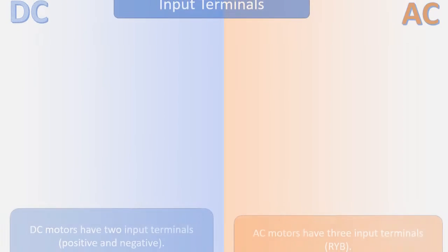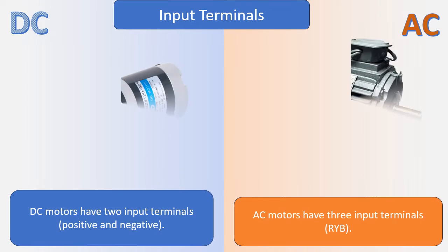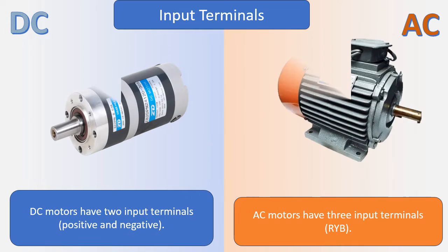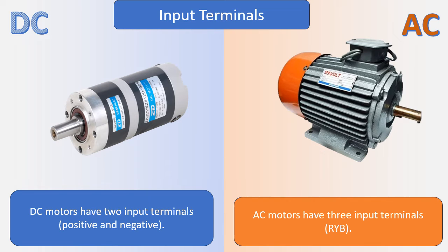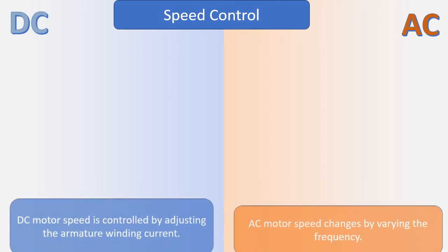Input terminals: AC motors have three input terminals — R, Y, B — while DC motors have two input terminals: positive and negative.